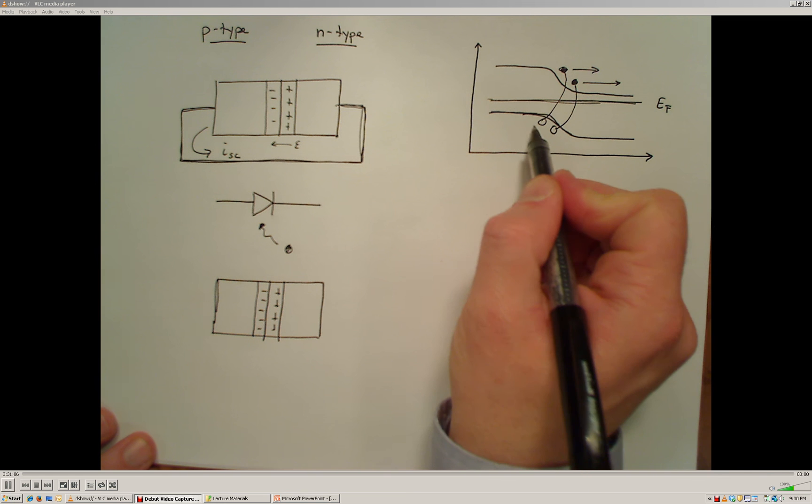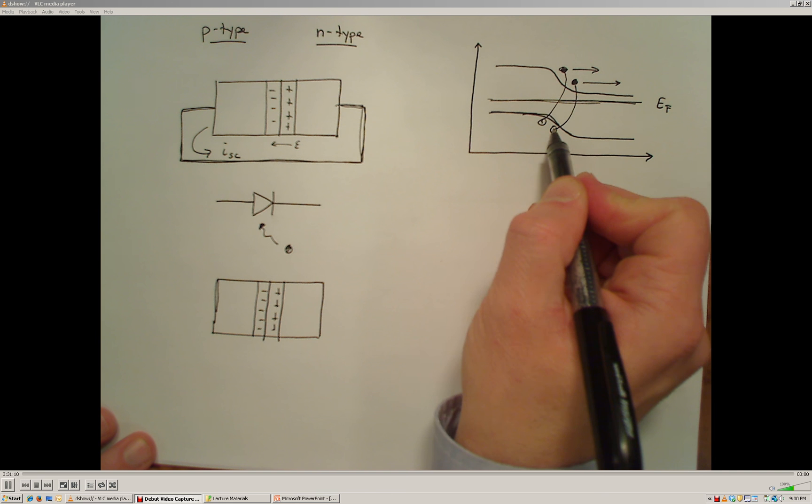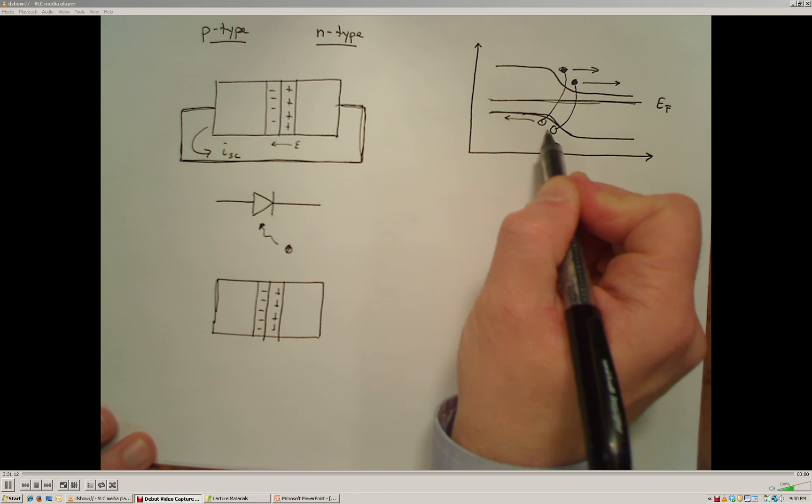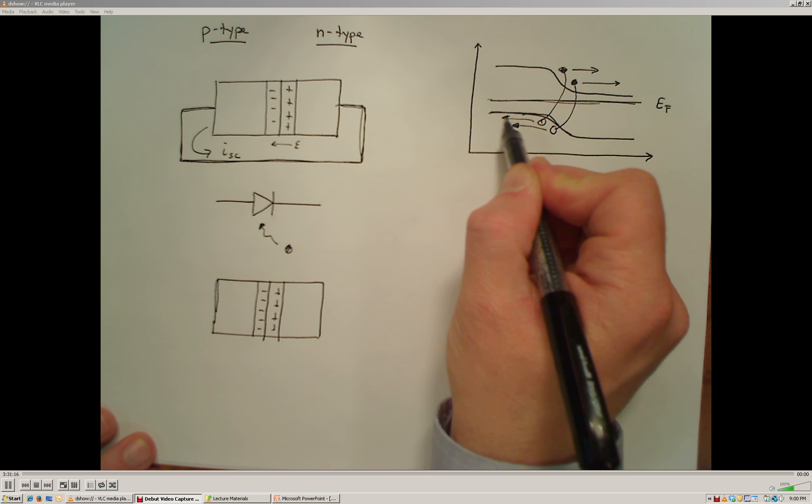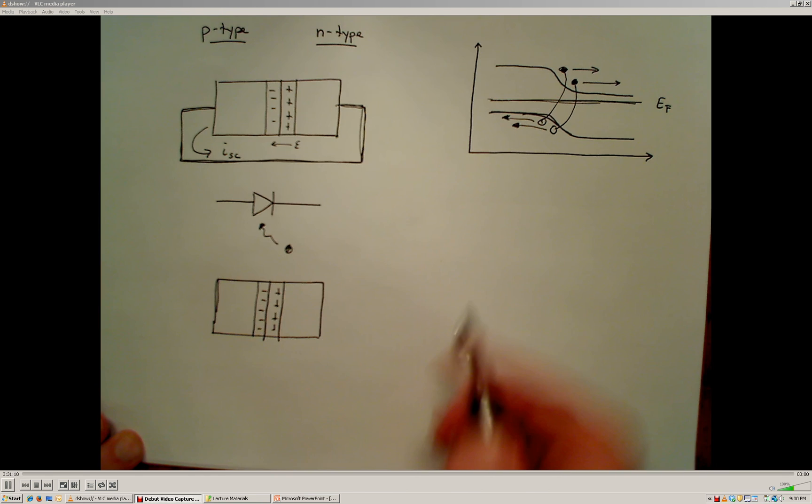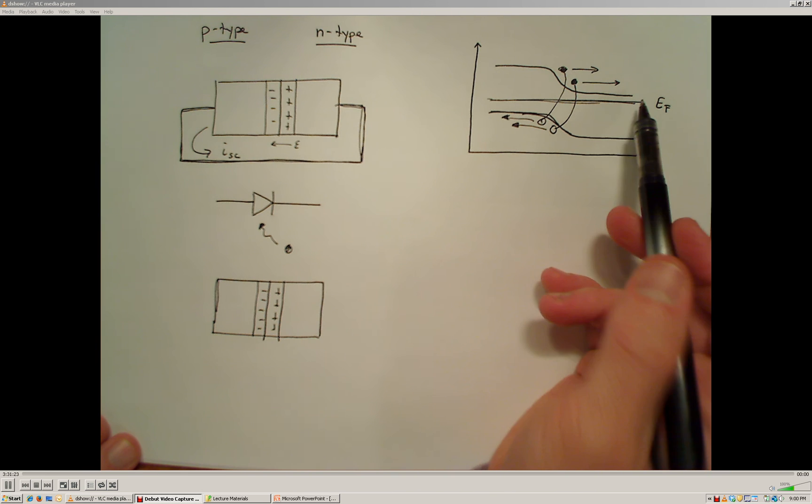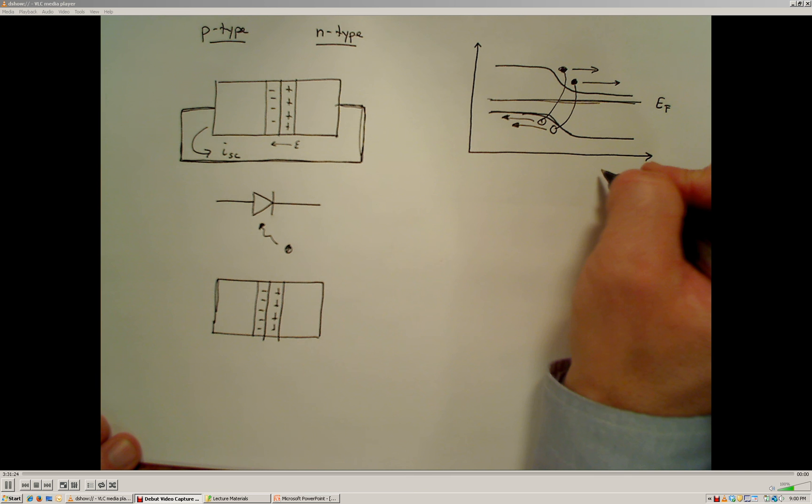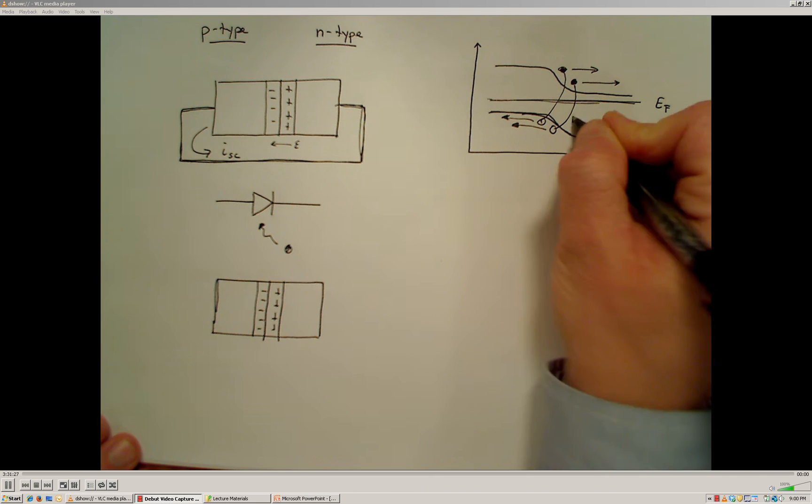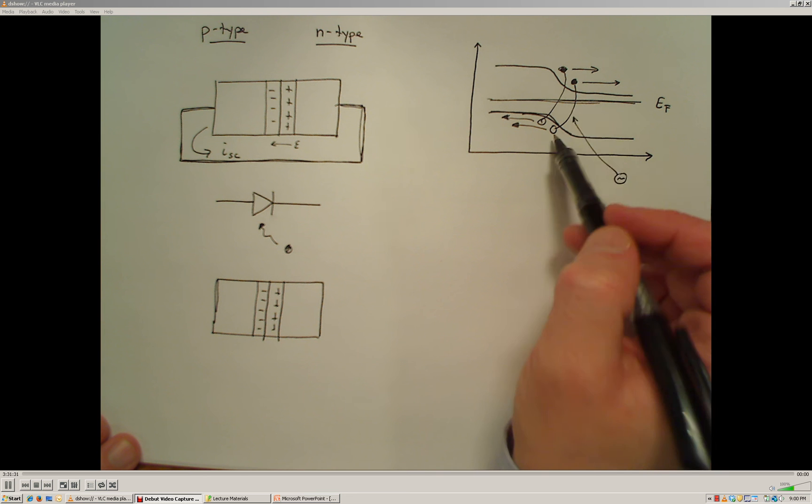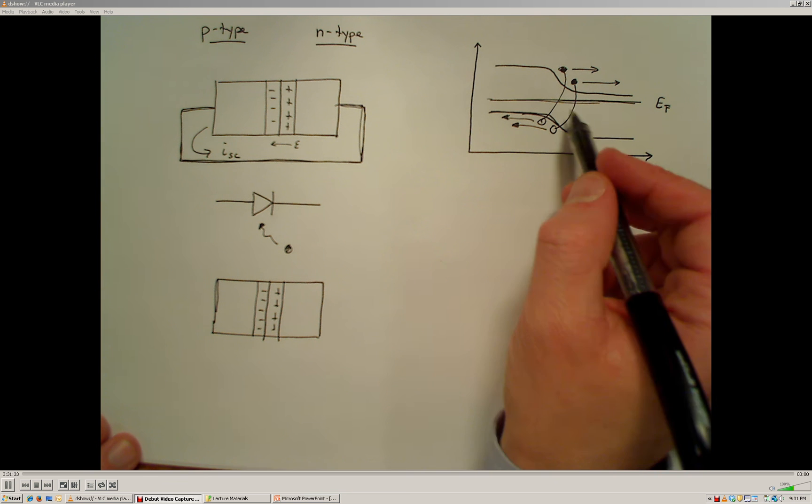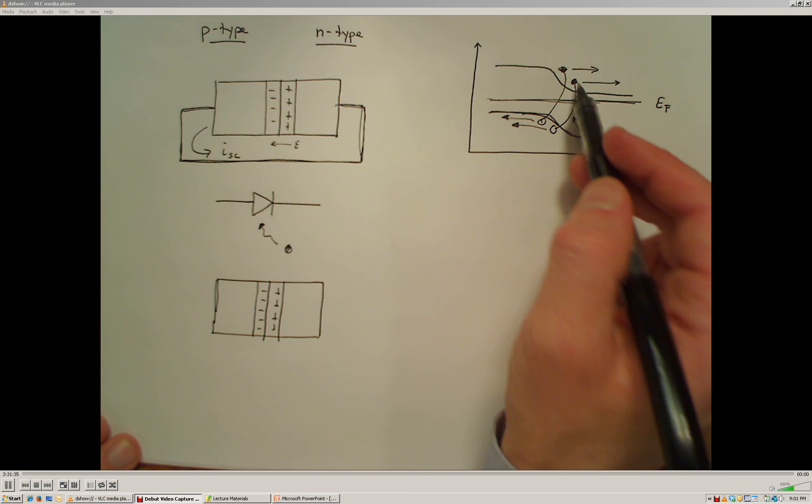And the same thing is going to happen with our positive charges, with our holes that are generated. Our holes are going to want to migrate in this direction because they act like bubbles, and they want to seek a higher energy state on this electron energy graph. And this net motion of charges when we have a photon of light coming in and striking the material in this region, when we generate these electron-hole pairs because of these photons knocking these electrons into the conduction band,